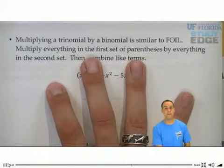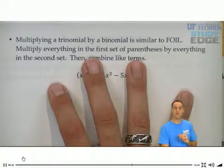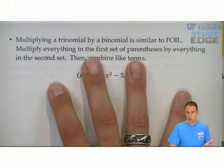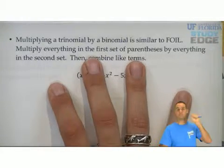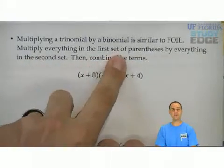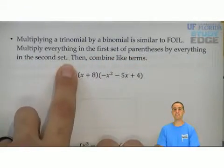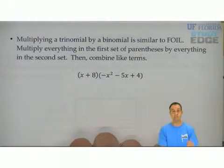Multiplying a trinomial by a binomial is similar to FOIL, but really, we can't use the word FOIL here because we have two terms times three terms. Multiply everything in the first set of parentheses by everything in the second set, and then combine like terms.